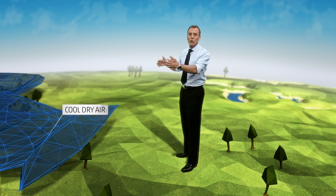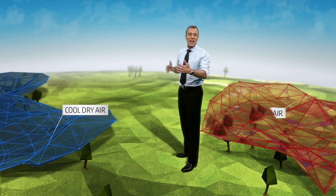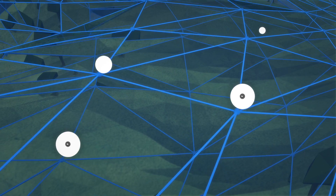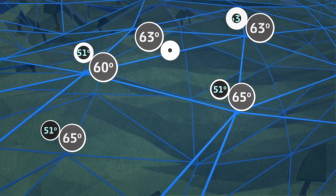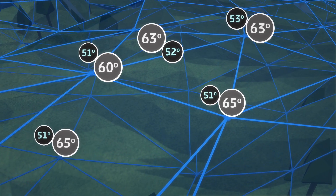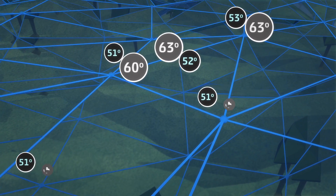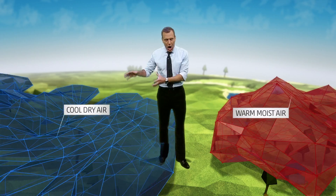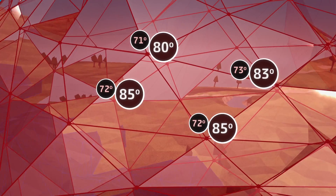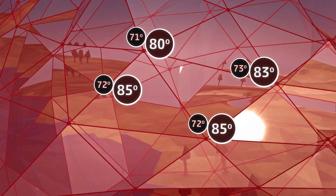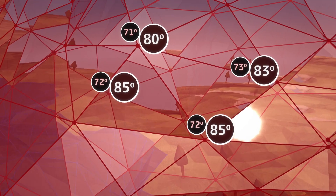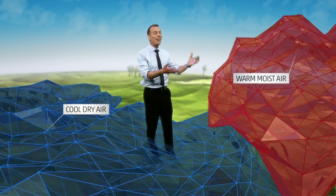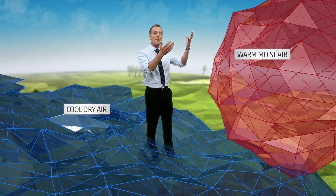A cold front is the leading edge of cool dry air advancing on warm moist air. The temperatures and dew points behind a cold front are very low and that air is very dense, undercutting warm moist air with high temperatures and high dew points. That of course creates lift in the atmosphere.